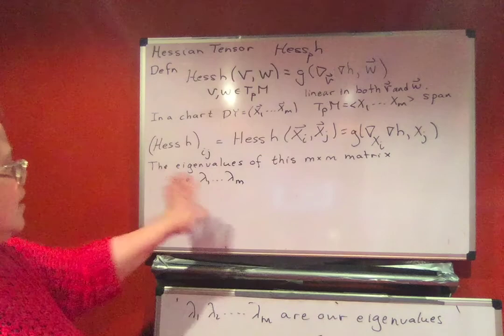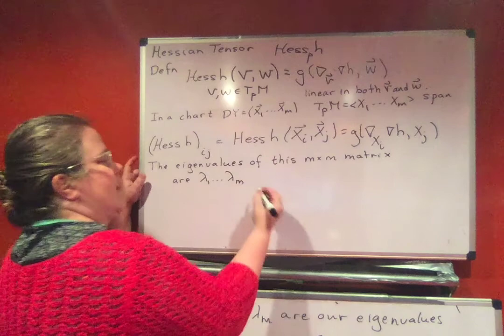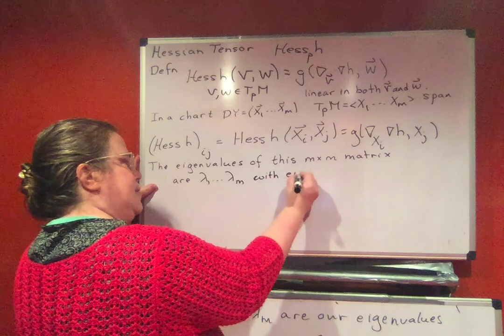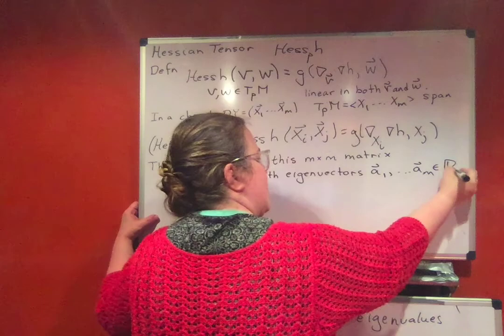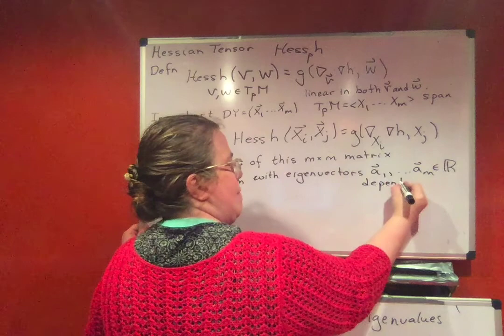Now you can actually prove that this is a symmetric matrix. We won't do that right away, but it is going to actually have a complete set of eigenvalues. And each of these eigenvalues will have eigenvectors. I'm going to not use V for the eigenvectors right now. I'm just going to call them a_1 up to a_M in R^M. And these eigenvectors are going to depend on the chart.